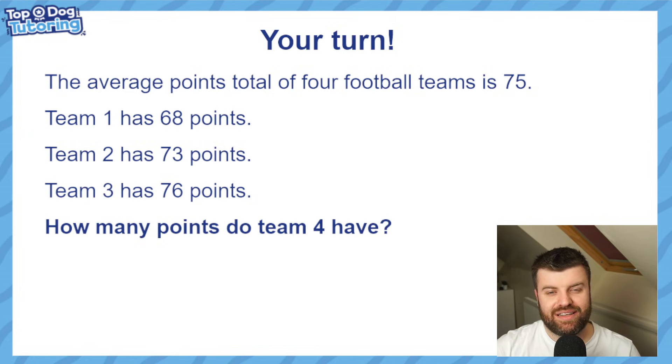With that in mind, this is your job. The average points total of four football teams is 75. Team 1 has 68, Team 2 has 73, Team 3 has 76. How many points must team 4 have to make the average 75? Very similar to the last one - you've got to work backwards. You've got to really understand what mean average is. If you know the answer, whack it down in the comments down below, and I will see you next time.